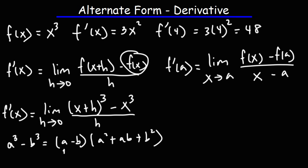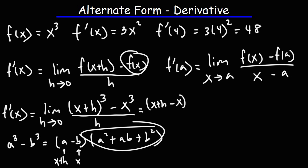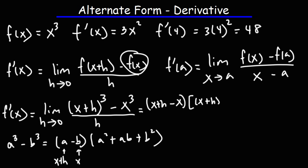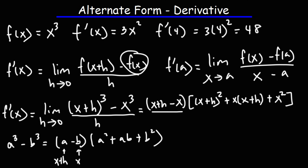In that example, a is going to be x plus h. So a minus b is x plus h minus x. Then a squared is x plus h squared, a times b is x times x plus h, and b squared is x squared. This is all divided by h.